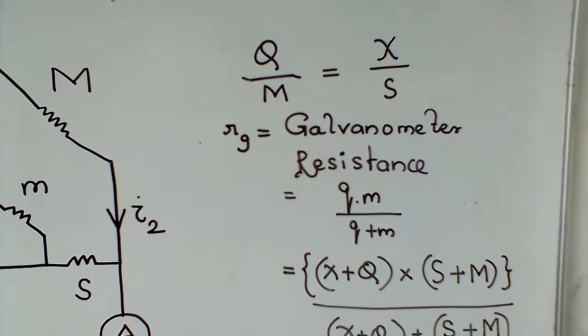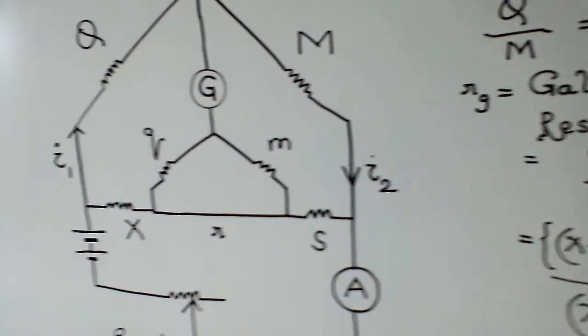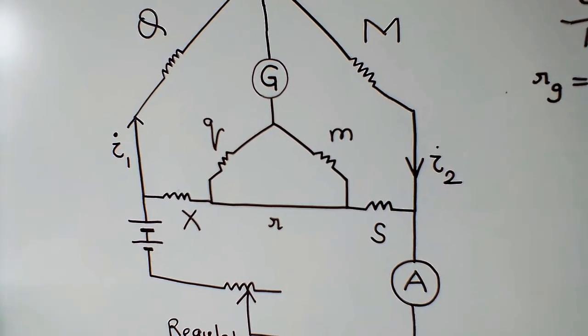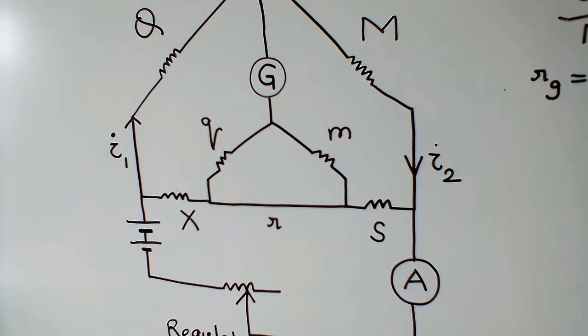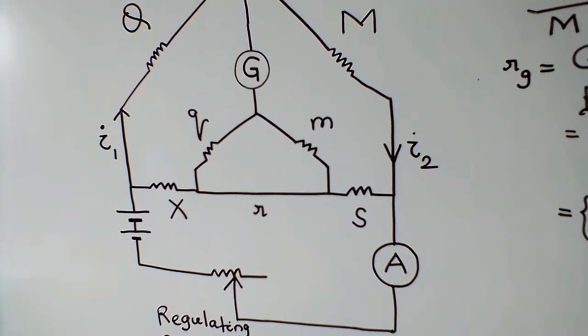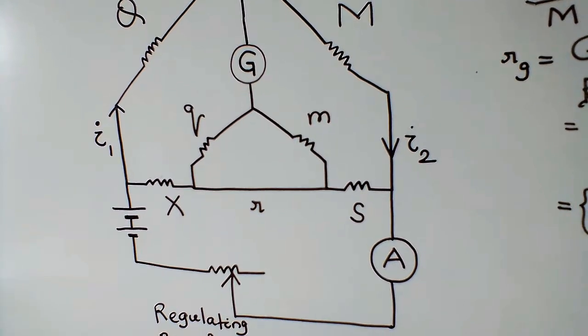If Rg is galvanometer resistance, from the figure I can say it should be equal to Qm by Q plus M. By applying division method, Rg equals Qm by Q plus M.